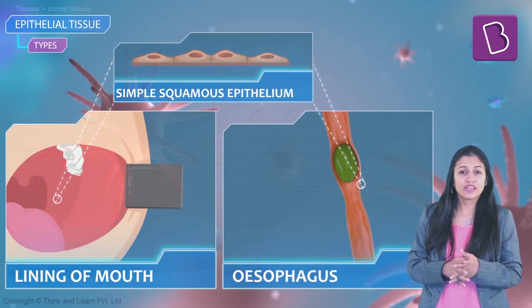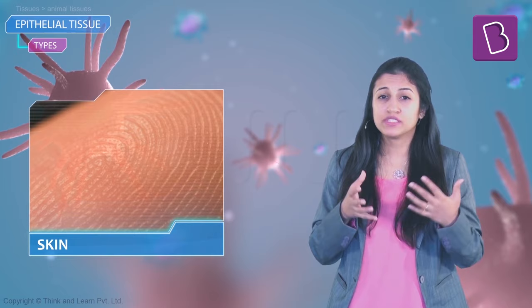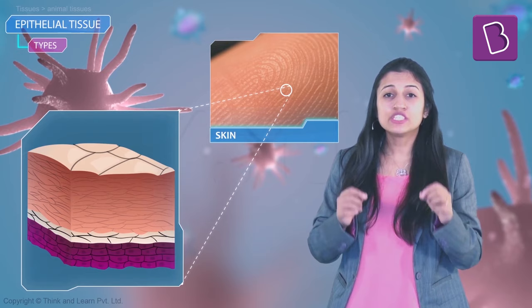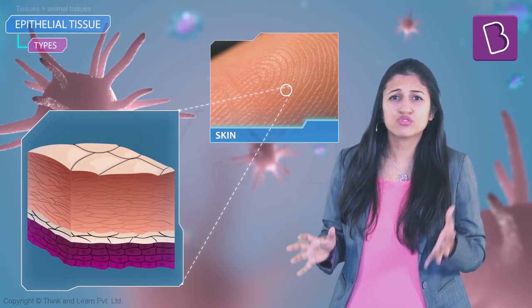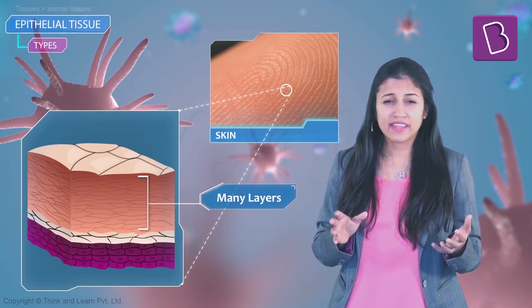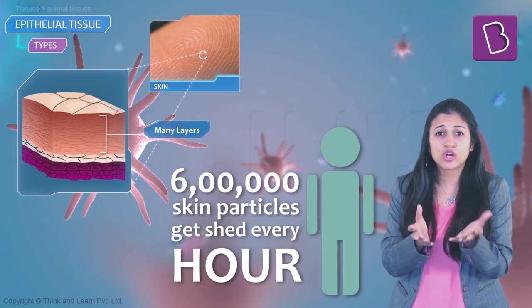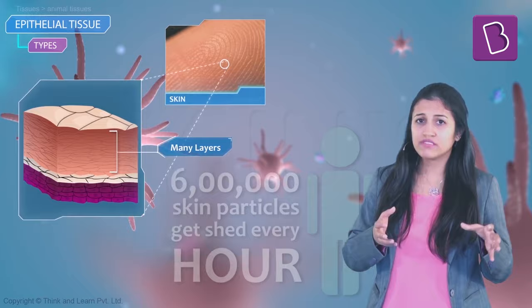The skin is also made of squamous epithelium, but not just one layer — because your body sheds skin. Though you can't see the particles, they are too small; epithelial cells are arranged in many layers to prevent wear and tear. Around 600,000 particles of skin are shed every hour.